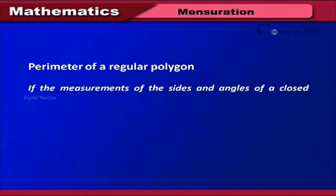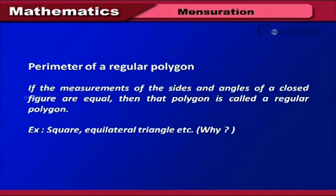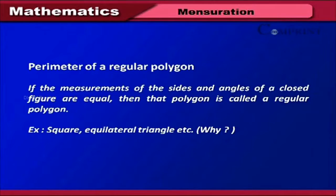Perimeter of a regular polygon. If the sides and angles of a closed figure are equal, then the polygon is called a regular polygon. Examples include the square and equilateral triangle.